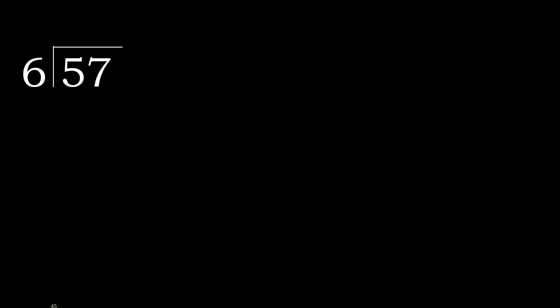57 divided by 6. 5 is less than 6, therefore move to the next digit. 57 is not less than 6, therefore we work with 57.